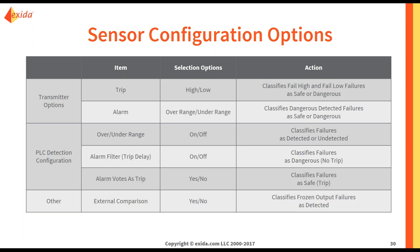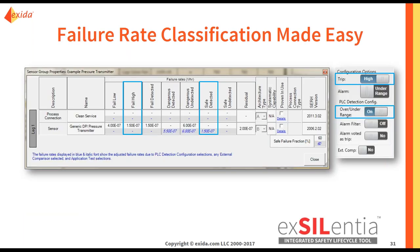So this is how Excellencia helps you to classify your failure rates. Let's go back to our sample problem. Starting with the fail high failures — you can see the blue box around the fail high black failure rate. In this case we have said it is a high trip, that the alarm is driving the signal under range, and that the PLC is detecting any over or under range signals. This means that your fail high trips the plant, so it is a safe failure. And since your PLC is detecting any over or under range signals, it is detected. So you see that 1.5e-7 is applied to the safe detected area. If you had selected off for over or under range detection, meaning your PLC cannot detect any out of range signals, this would be under the safe undetected category.